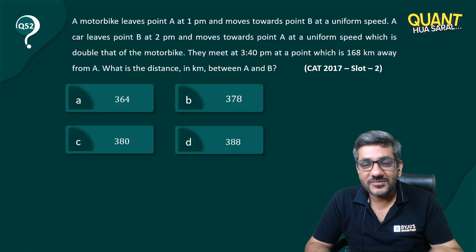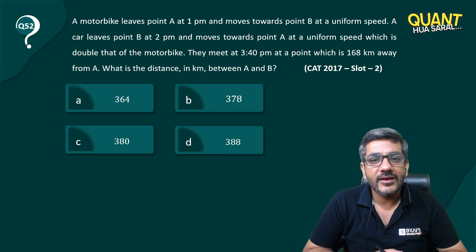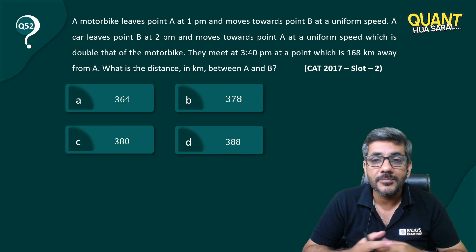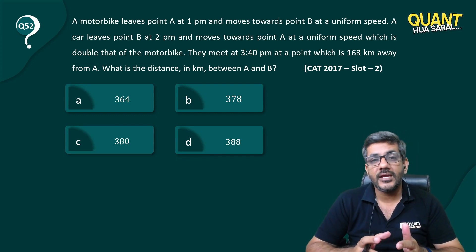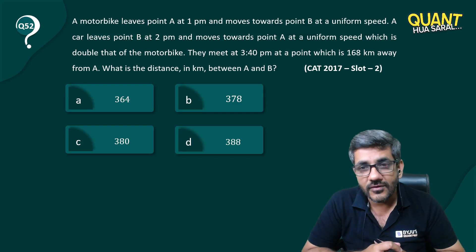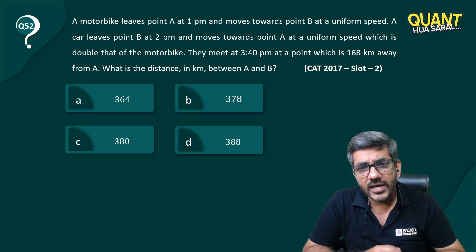Hello, welcome to question number 52 of Quant Hua Saral. A motorbike leaves point A at 1pm and moves towards B at uniform speed. A car leaves point B at 2pm and moves towards A at uniform speed which is double that of the motorbike. They meet at 3:40pm at a point which is 168 kilometers away from A.